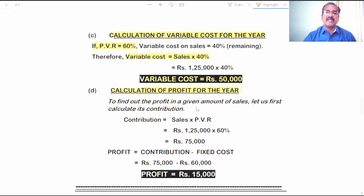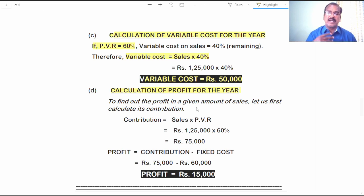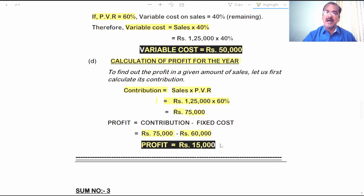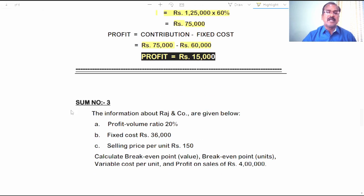For calculation of profit for the year, we first calculate contribution because fixed cost is also given. Contribution equals sales into PVR, which comes to 75,000 rupees on sales of 1 lakh 25,000 rupees. From contribution of 75,000, subtract fixed cost of 60,000 — the balance of 15,000 rupees is the profit the company earns when it makes sales of 1 lakh 25,000 rupees.